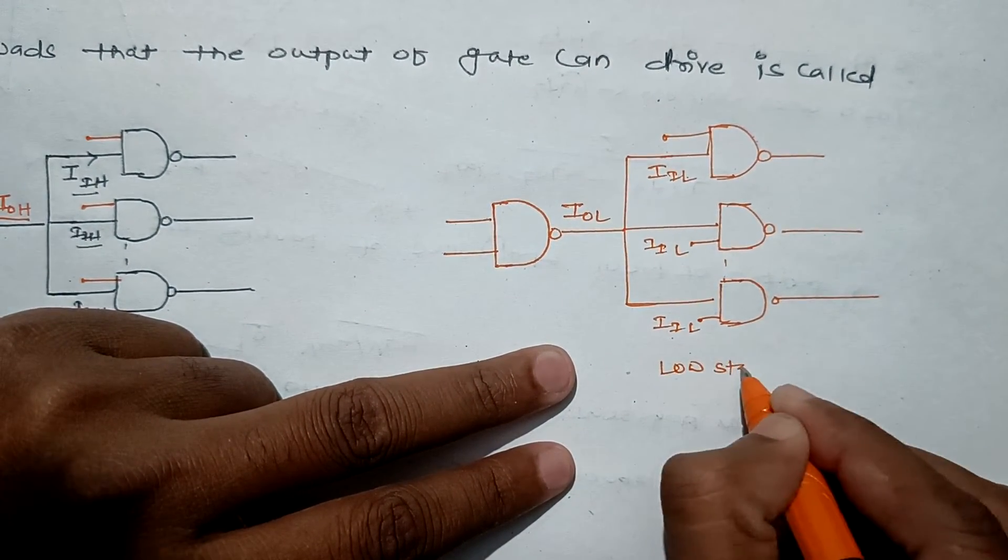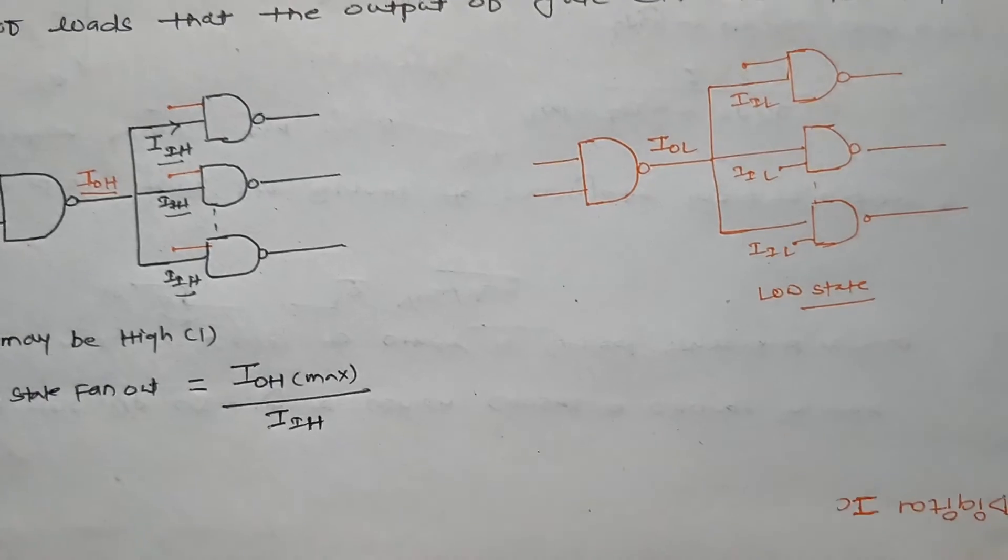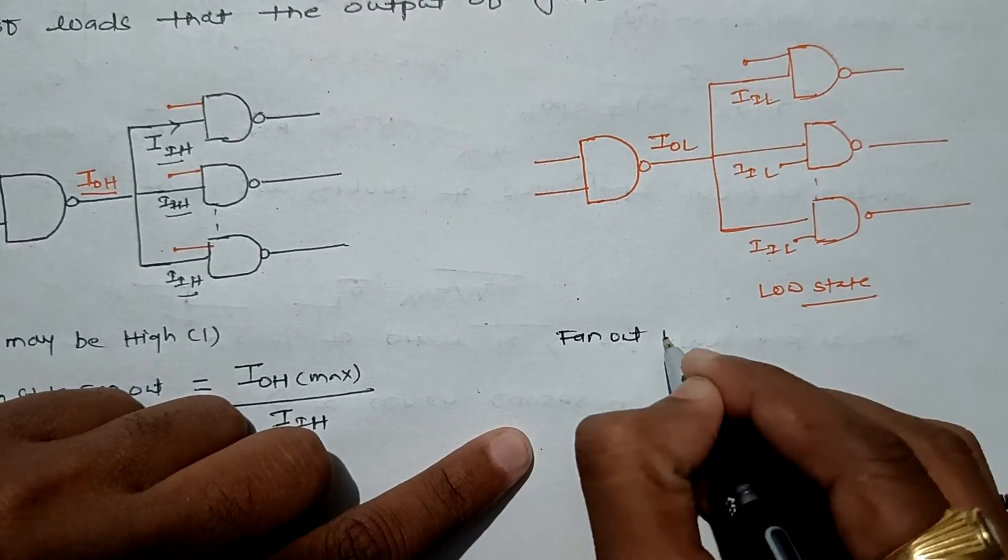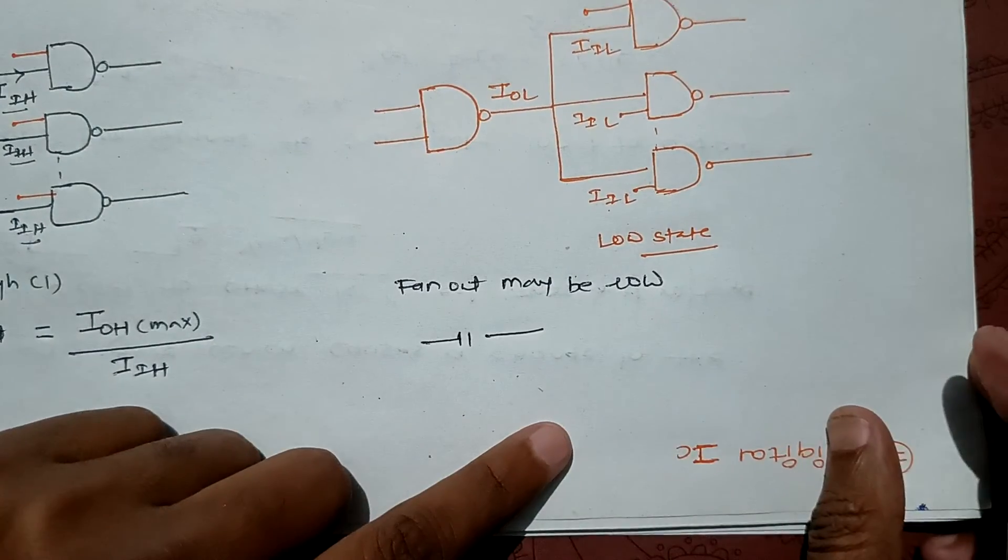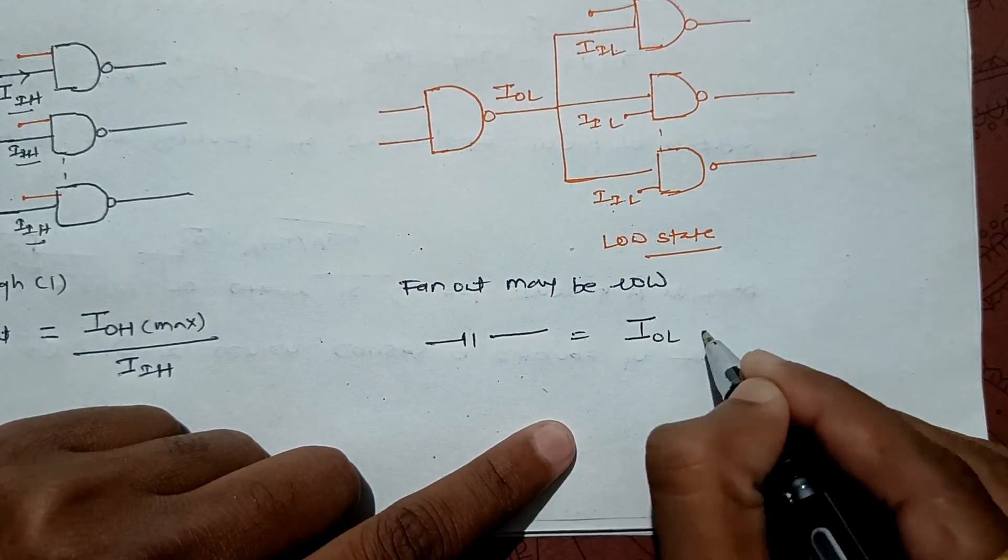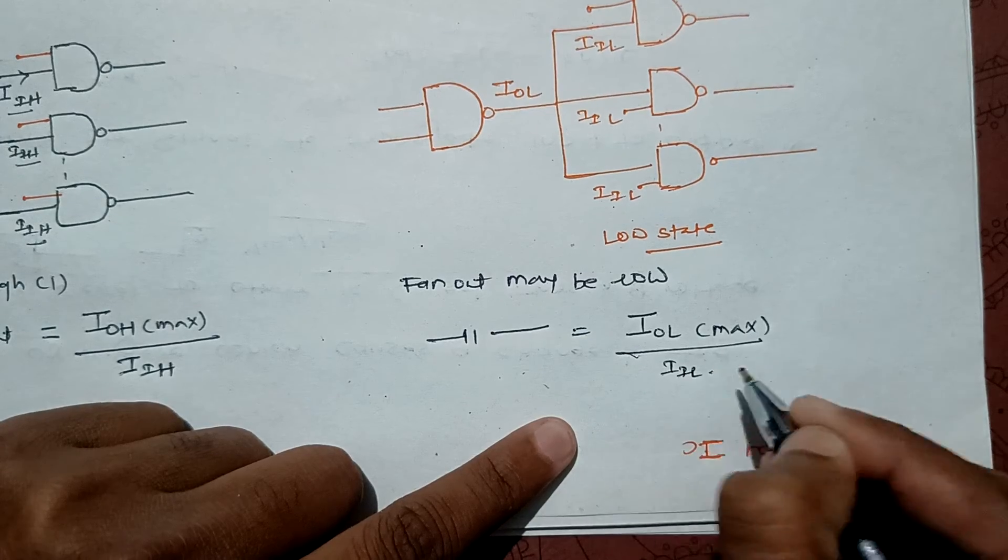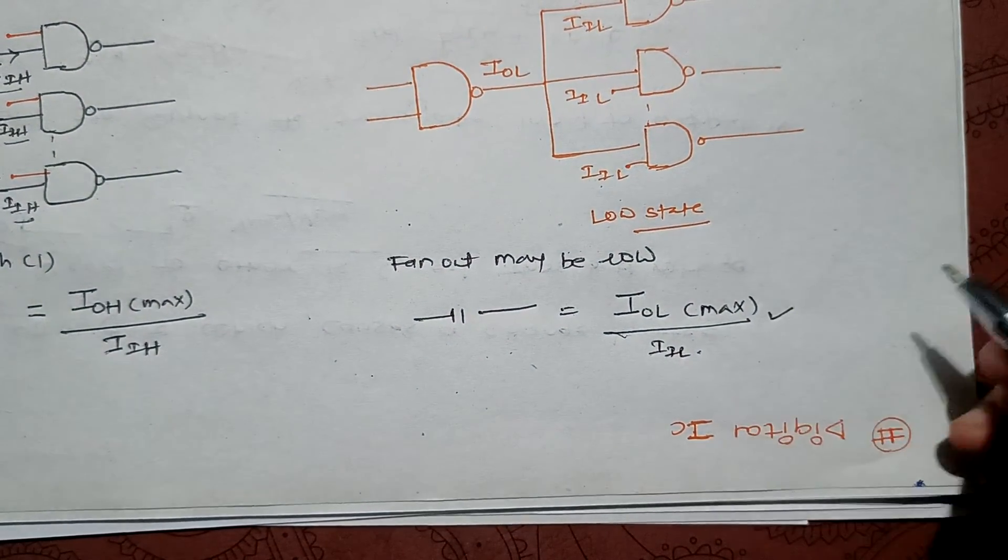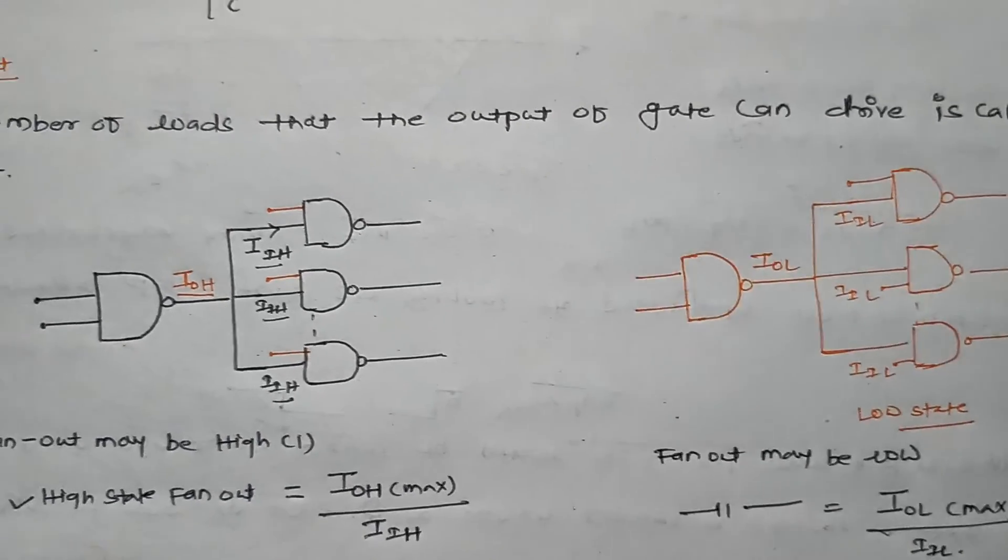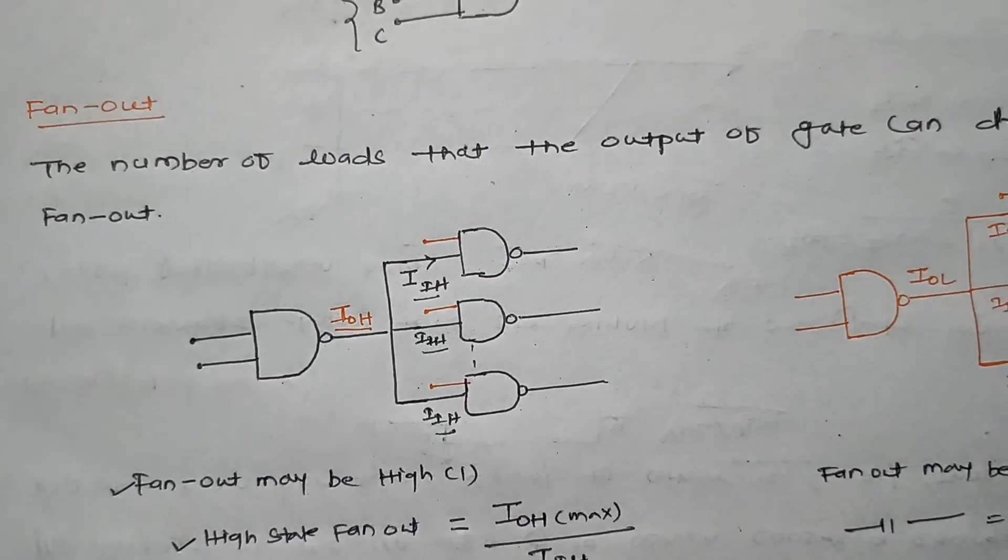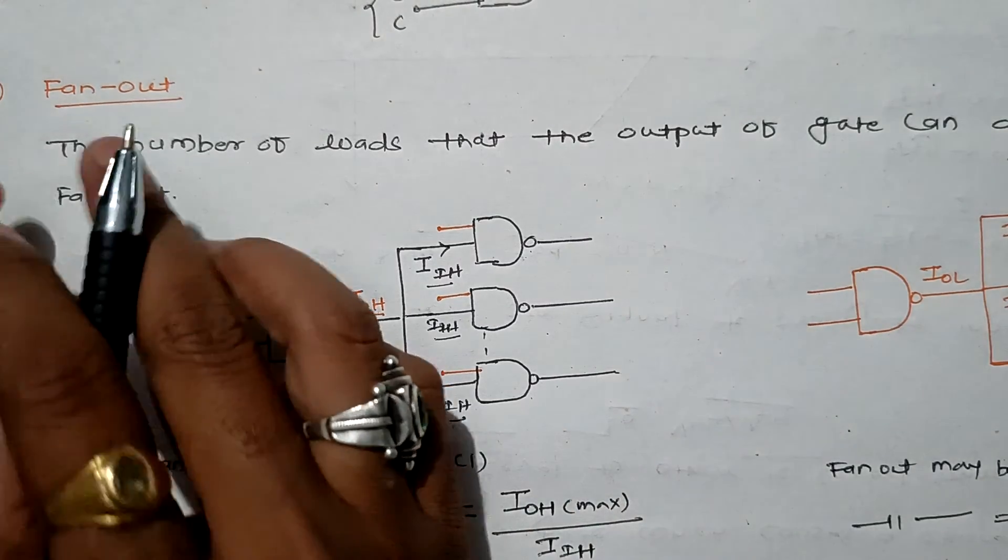This is in low state when we are getting a low current logic level. In this case, fan-out may be low logic one, so low state fan-out is equal to the ratio: IOL maximum (low output current max) divided by IIL (input low current). One more interesting thing is that fan-out should be as high as possible - it should drive maximum number of loads without disturbing our system.